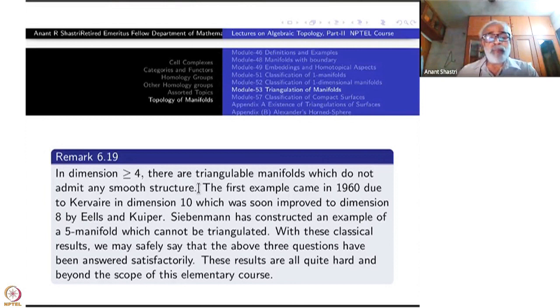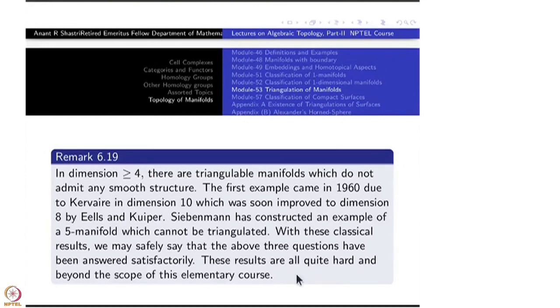Siebenmann has constructed an example of a five-dimensional manifold which cannot be triangulated. With these classical results, we may safely say that the above three questions have been answered satisfactorily. Why am I not talking about dimension 4? Dimension 4 is much more crazy, the craziest dimension amongst all of them. So I will not speak about it here. These results are quite hard and beyond the scope of this elementary course.